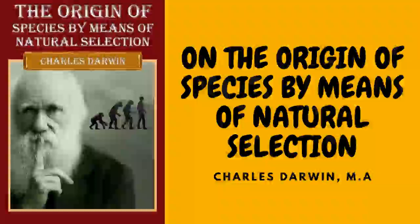As some organisms will breed most freely under the most unnatural conditions — for instance the rabbit and ferret kept in hutches — showing that their reproductive system has not been thus affected, so will some animals and plants withstand domestication or cultivation and vary very slightly, perhaps hardly more than in a state of nature. A long list could easily be given of sporting plants: by this term gardeners mean a single bud or offset which suddenly assumes a new and sometimes very different character from that of the rest of the plant. Such buds can be propagated by grafting etc., and sometimes by seed. These sports are extremely rare under nature, but far from rare under cultivation, and in this case we see that the treatment of the parent has affected a bud or offset and not the ovules or pollen.